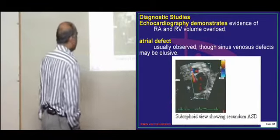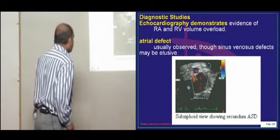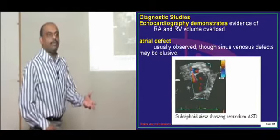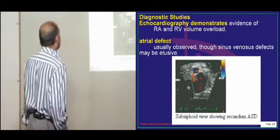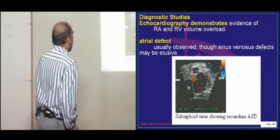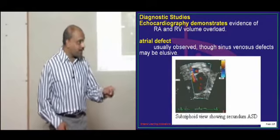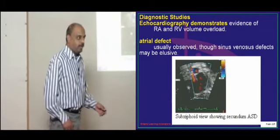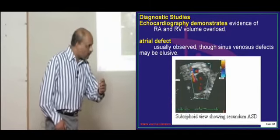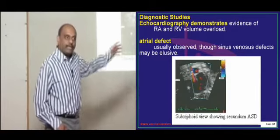If you do the echocardiography, you can identify that RA and RV volume overload and you can quantitate it. Sometimes sinus venosus type of ASD may not be detected on the echo; for that you need to have a better subcostal view in order to identify it.